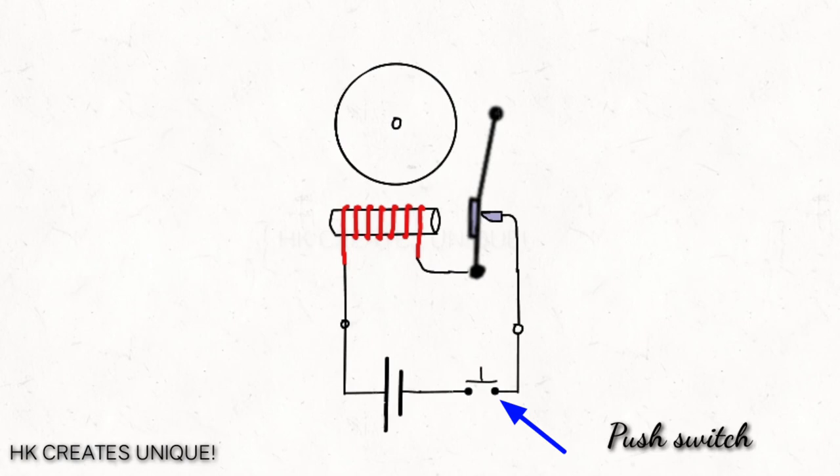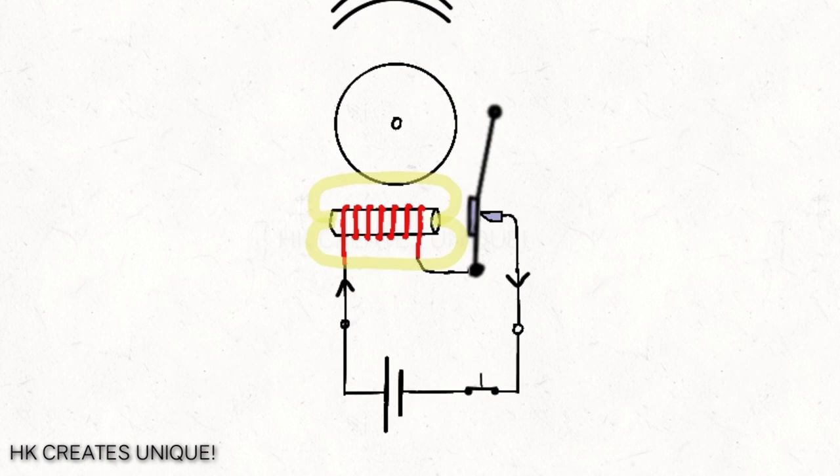Also, for better results in an electric bell, a horseshoe type electromagnet is used because it has more strength.